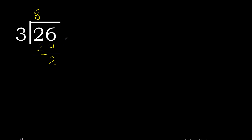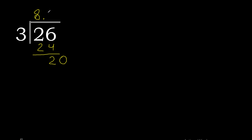There is no number that goes down, therefore complete with 0 — always complete with 0 — and here add the decimal point. 3 multiplied by 7 is 21, which is excessive.